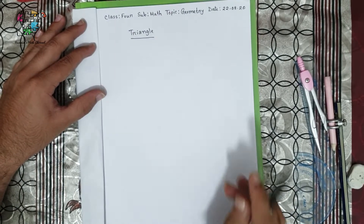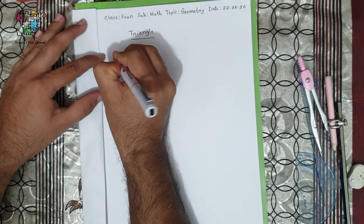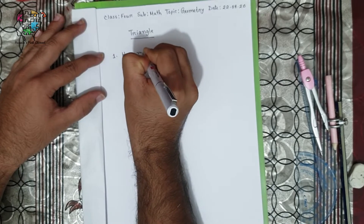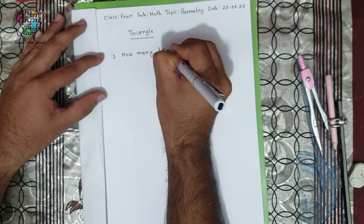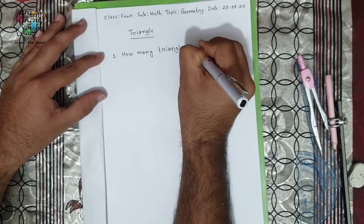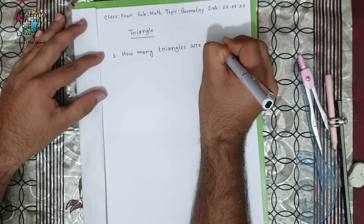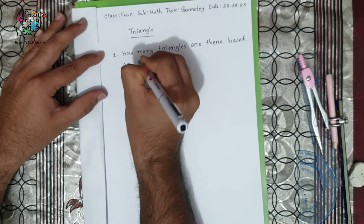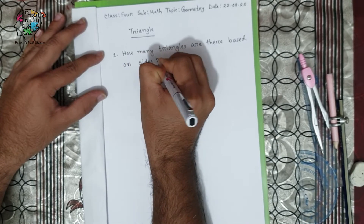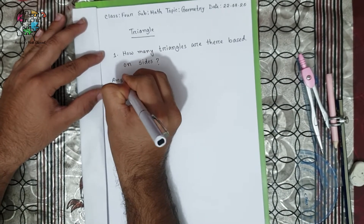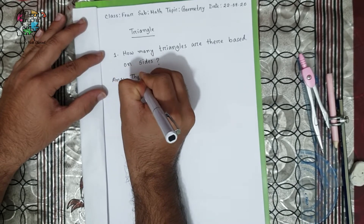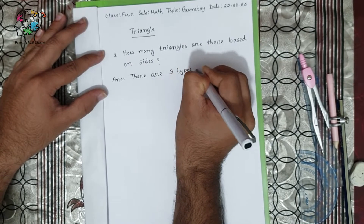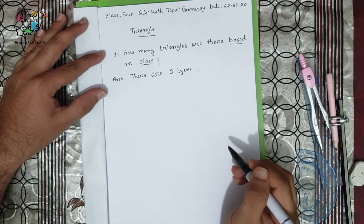What are the types of triangle? Number one: how many triangles are there based on sides? The answer is there are three types of triangle based on sides.